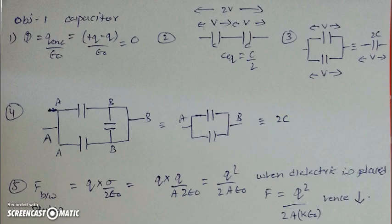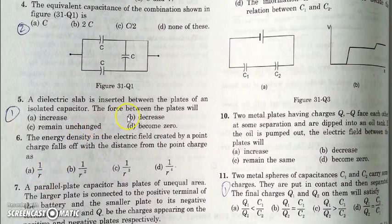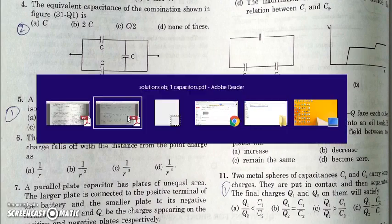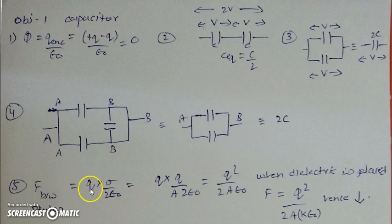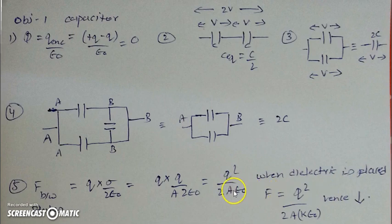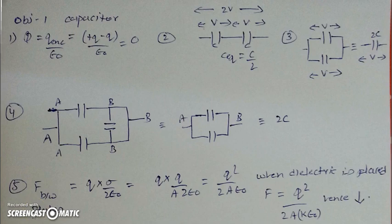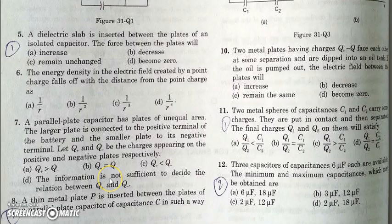The next question asks how the force of attraction between capacitor plates changes when a dielectric slab is inserted. The force between the plates is given by the charge on one plate times the field of the other, which is σ/(2ε₀). Replacing σ with Q/A and inserting a dielectric introduces a factor of K (greater than 1) in the denominator, so the force will decrease — provided the charge remains constant.